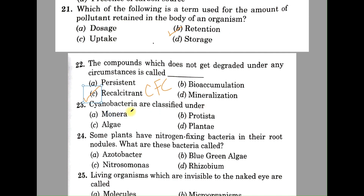Question number twenty-three: cyanobacteria are classified under — A: Monera, B: Protista, C: Algae, D: Plantae. This is an easy question. Cyanobacteria, also known as blue-green bacteria, are placed among the bacteria. The correct answer is A, Monera.